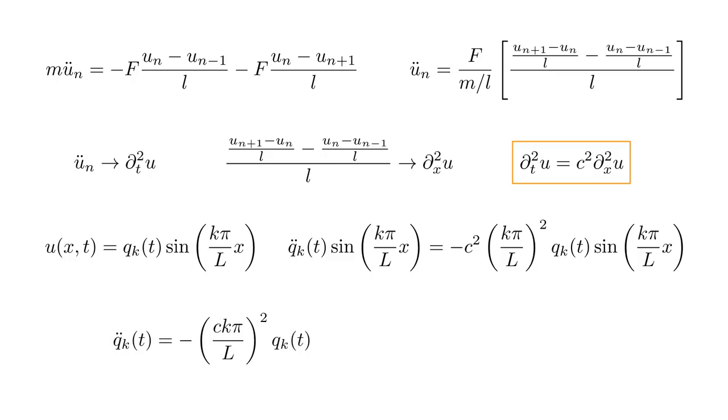Canceling the common sine factor, we are left with q_k double dot equals minus quantity c k pi over l squared times q_k.